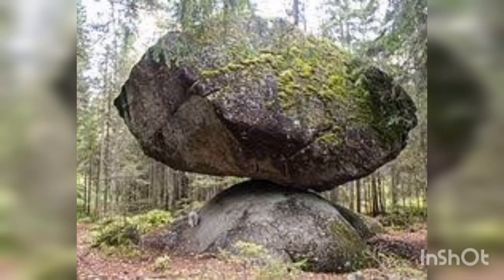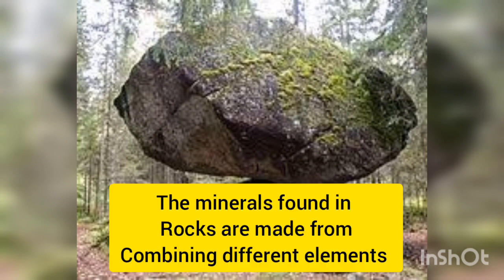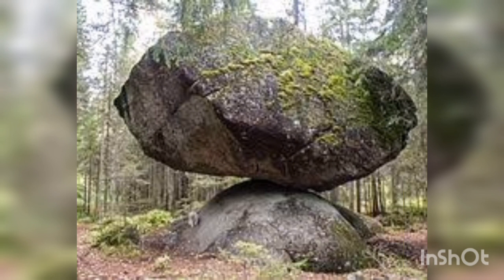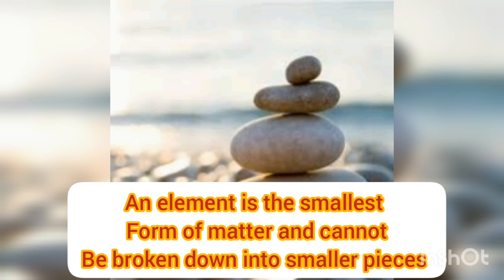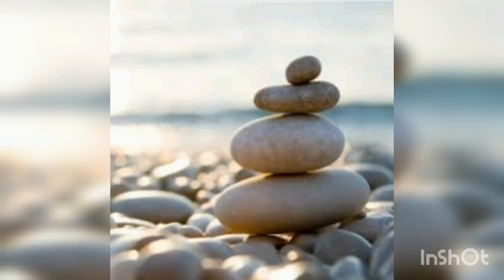The minerals found in rocks are made from combining different elements. Sometimes these rocks can be made from minerals of the same elements. When elements combine, they form minerals, and when minerals combine, they form rocks. An element is the smallest form of matter and cannot be broken down into smaller pieces.